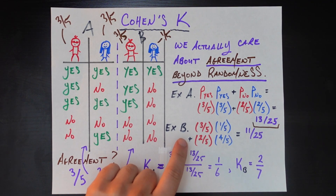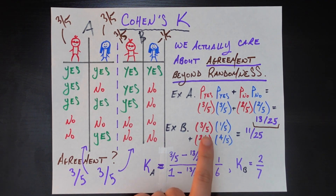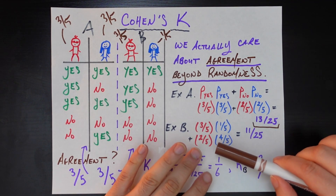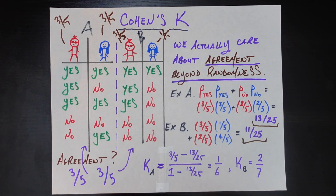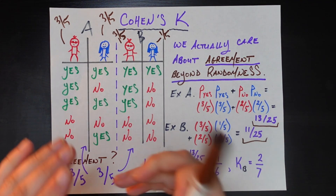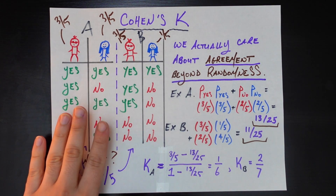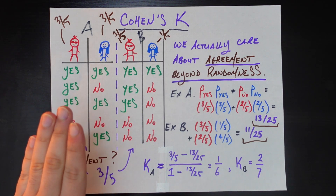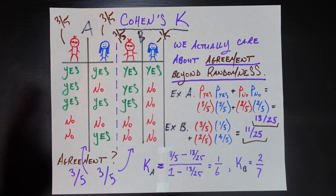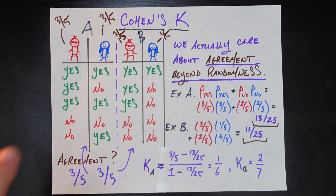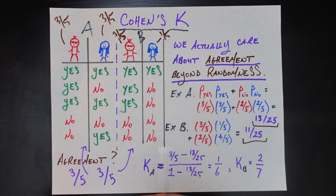We go through the same exercise for B. The probability Mr. Red gives a yes is three out of five; the probability Mrs. Blue gives a yes is one out of five. Adding in the no's, we get 11 out of 25. So the math lines up with what we believed intuitively: in the A rankings, there's a higher probability of agreeing by random chance alone — because they had the same propensities — while in the B case it's only 11 over 25, a lower chance of agreeing by random chance.